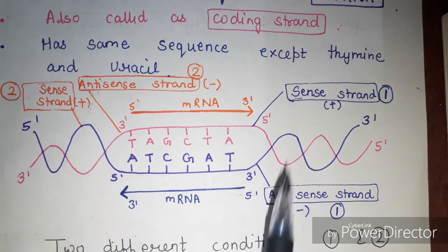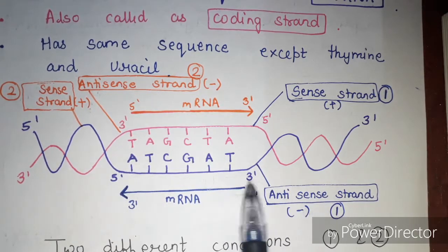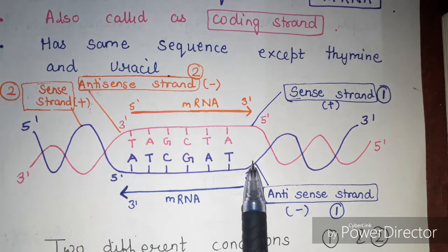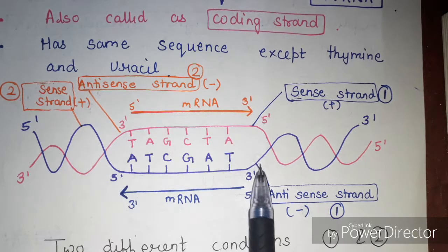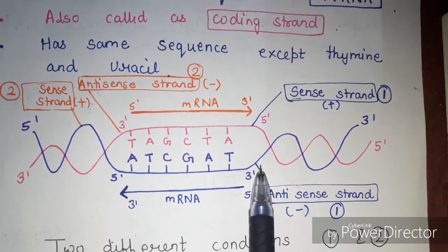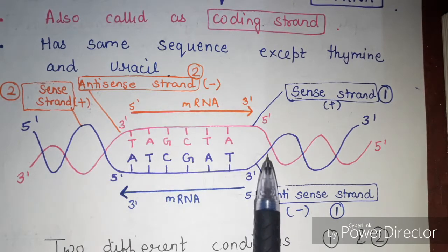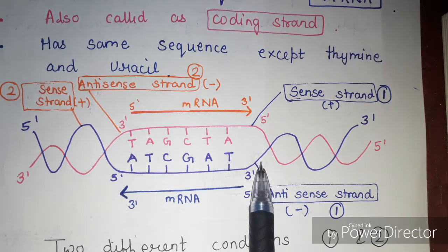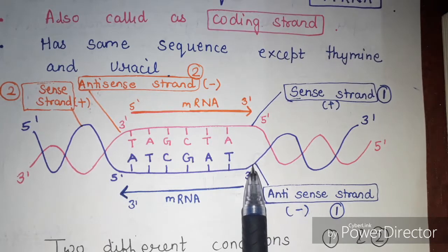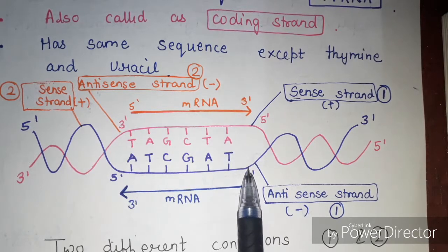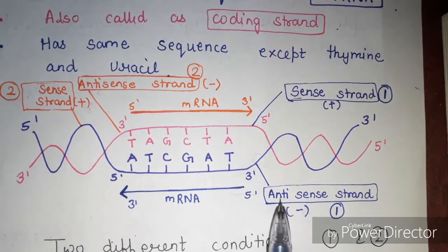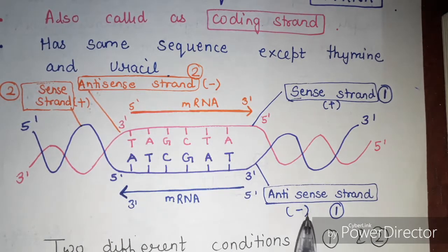I have shown two conditions here. In the first condition, if the promoter is located on one side, the RNA polymerase binds to the promoter and the transcription process starts. Complementary nucleotides attach to form the new RNA strand. The strand being read is the antisense strand, also called the template strand, represented by a negative sign. The other strand that is left is the sense strand.